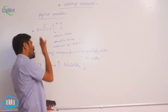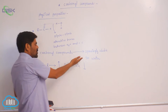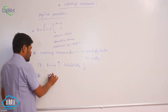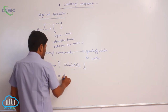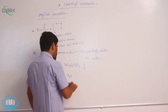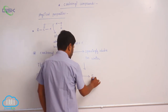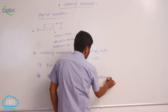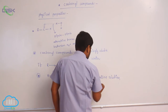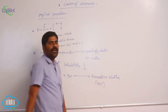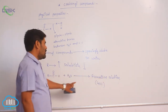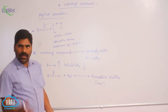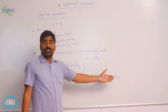Therefore, when the number of alkyl groups increases, solubility gradually decreases. Now, formaldehyde is mainly soluble in water to form a formaldehyde solution. This is 40 percentage of formaldehyde with water, and it is mainly used for the storage of specimens like botany and zoology specimens.